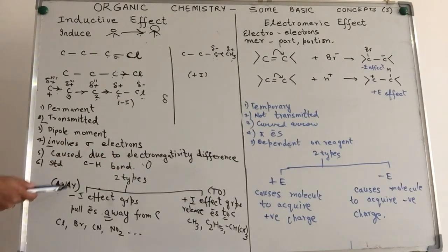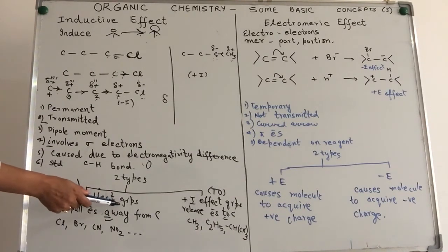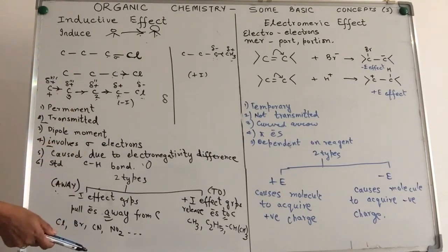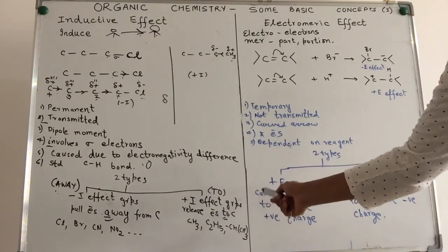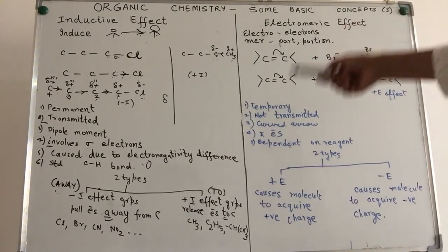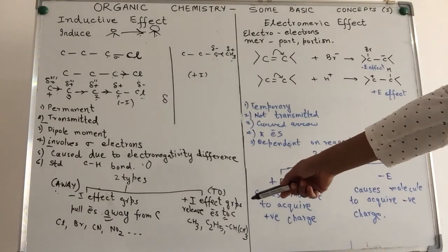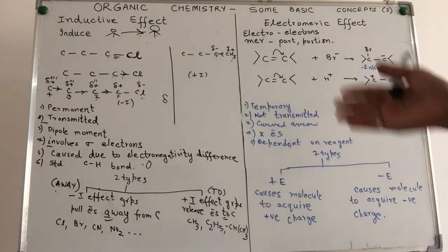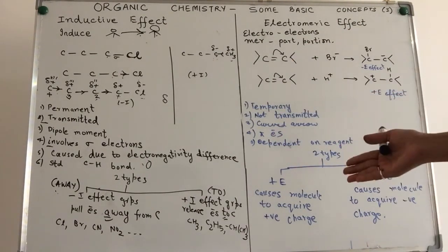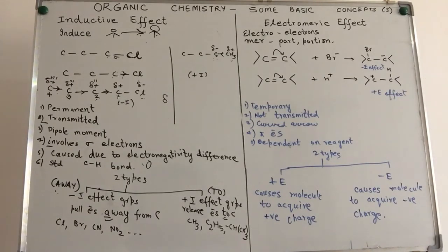The group that takes away acquires a negative charge, so we call these minus I effect groups — for example, chloride, bromide, cyanide, nitrite. These are all groups which will take away electrons from the carbon. On the other hand, there are give-to groups which are very humble — they will give electrons, like methyl, ethyl, isopropyl, isobutyl and so on. So they cause plus I effect whereas the first ones cause minus I effect.